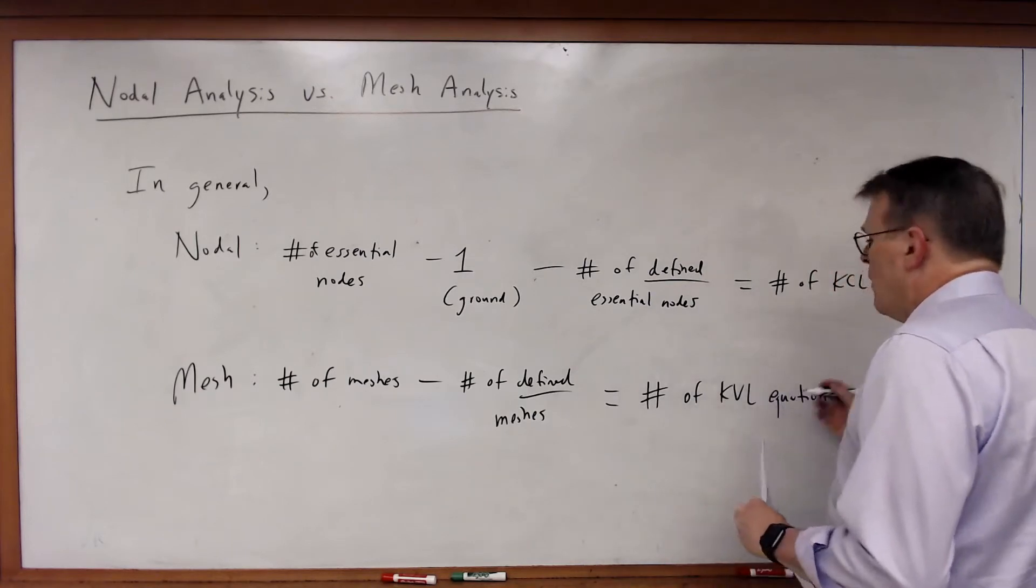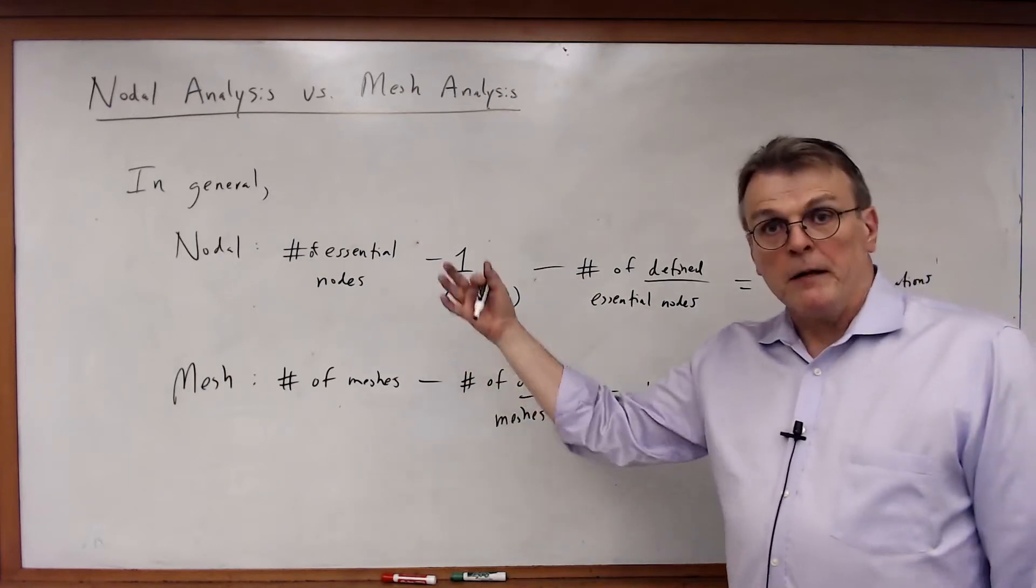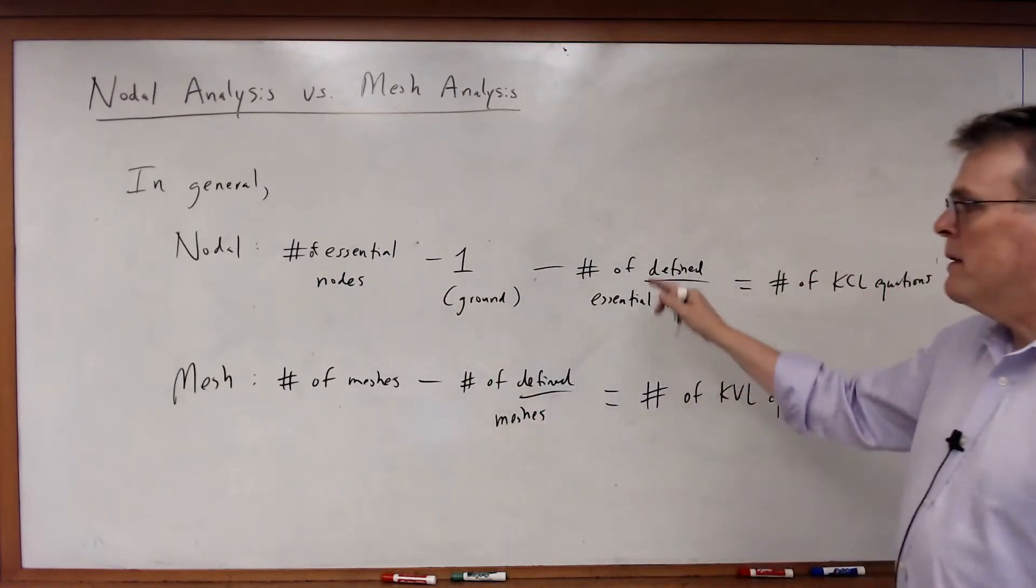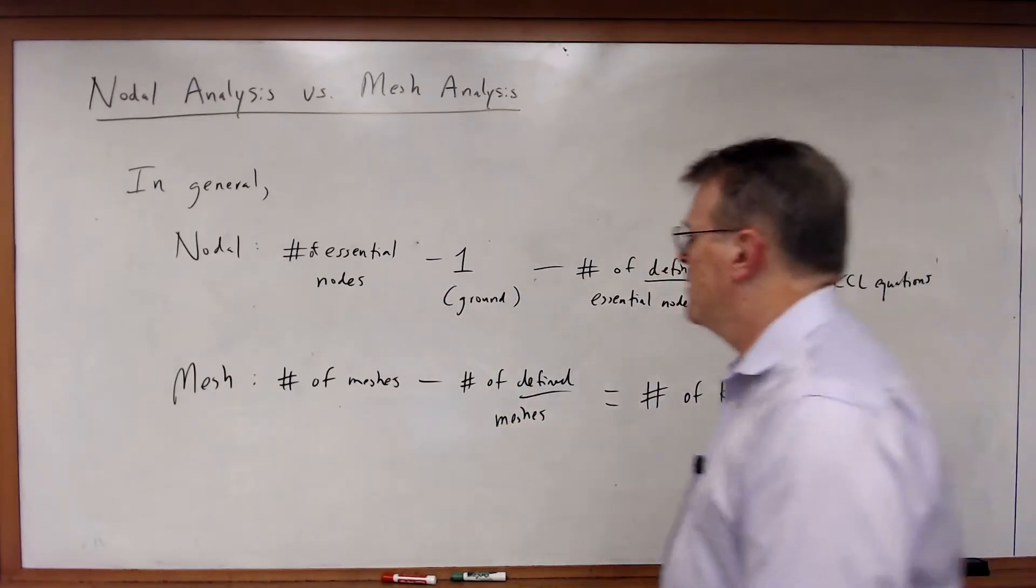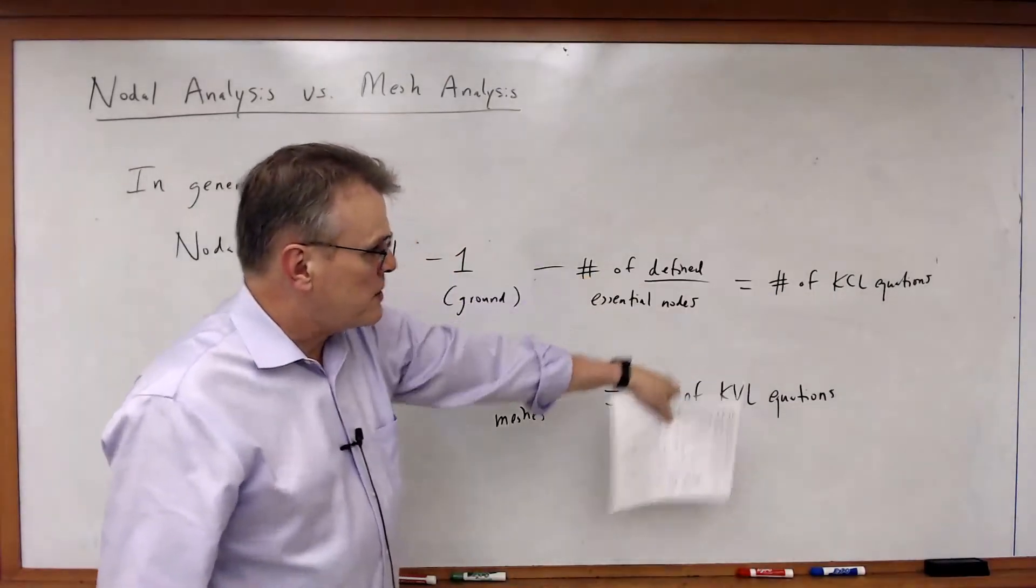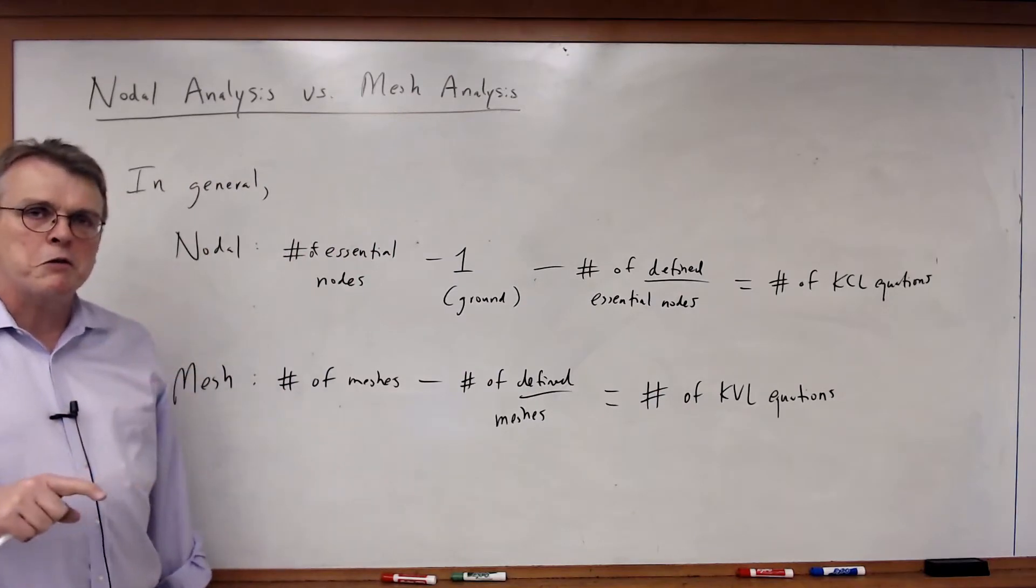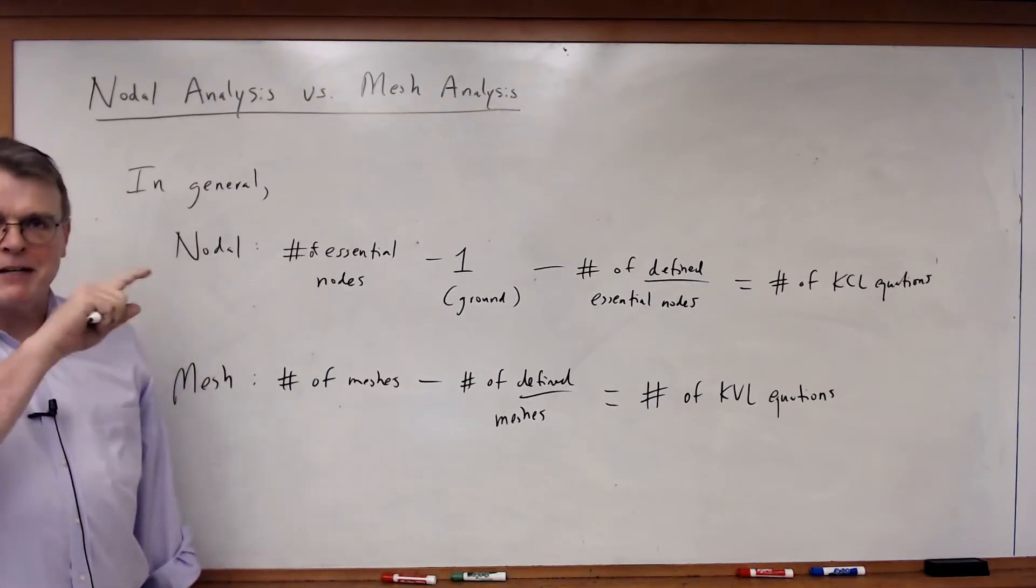Once again, that may not be all of the equations you need. You may, of course, need dependent source variable and constraint equations. But this gives you a rough idea. So you look at these two numbers, which is smaller, the number of KCL or the number of KVL. And in general, the smaller of those two numbers is going to be the technique you want to use.